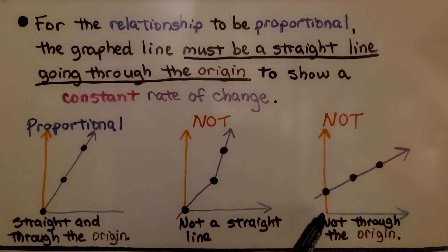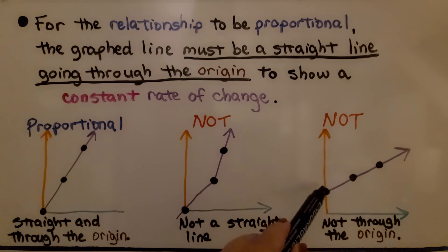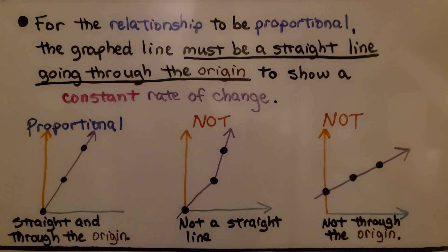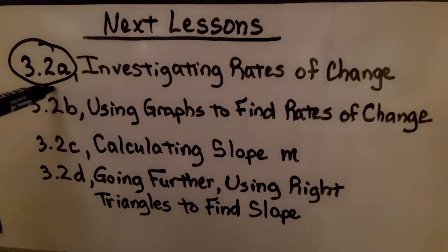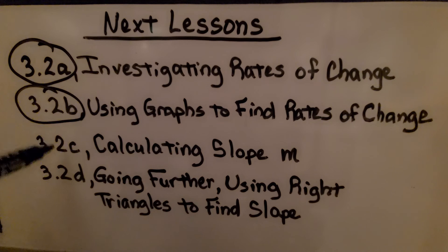For a relationship to be proportional, the graphed line must be a straight line going through the origin to show a constant rate of change. One graph isn't a straight line, so it's not proportional. Another doesn't go through the origin — it's up on the y-axis — so that's not proportional either. We've finished with lesson 3.2b and will move on to 3.2c, calculating slope m.